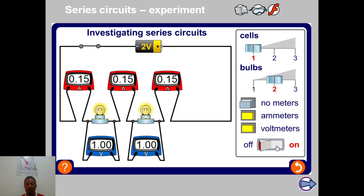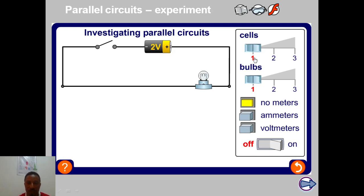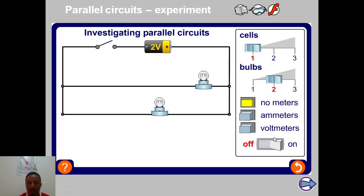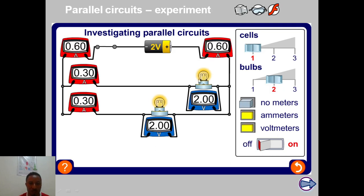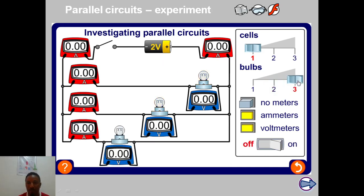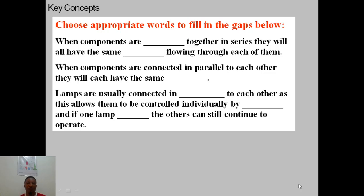Investigating the parallel circuit: with two bulbs in parallel and the switch on, the current is shared — branching into 0.3 amps and 0.3 amps — but the voltage remains 2 volts across each bulb. Even if I add a third bulb, the voltage is still 2 volts across each one. The total current of 0.9 amps splits into 0.3, 0.3, and 0.3 amps, which recombine to give 0.9 amps.